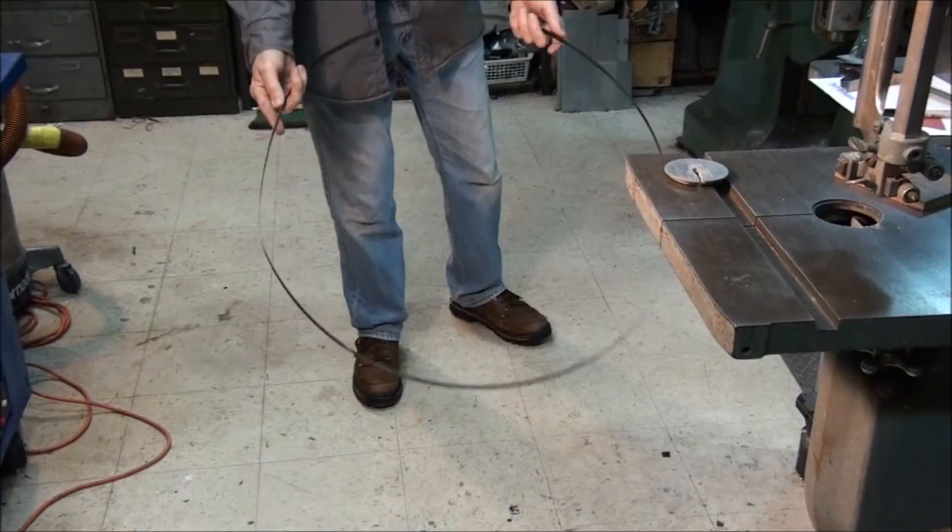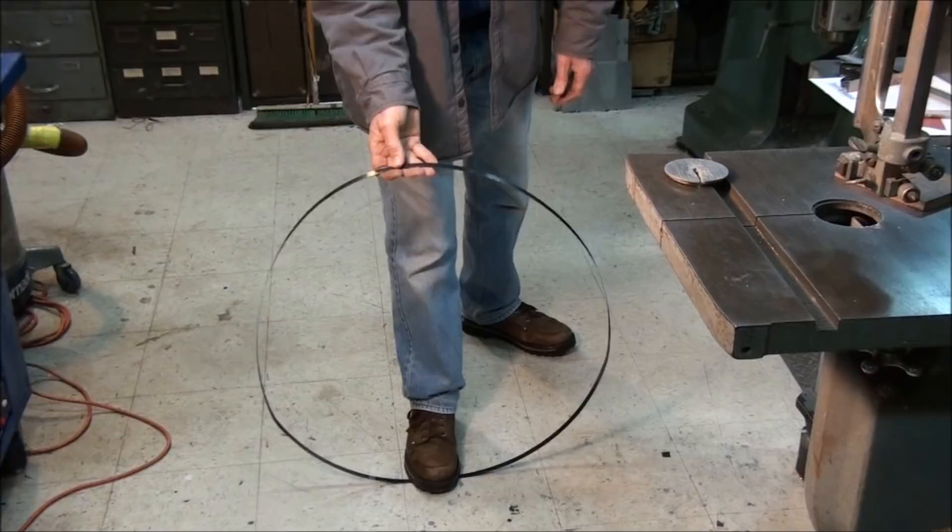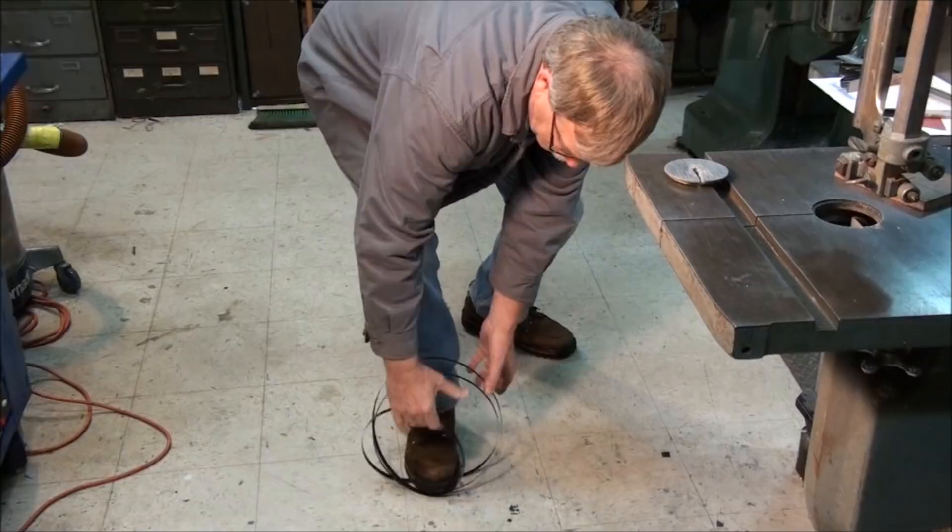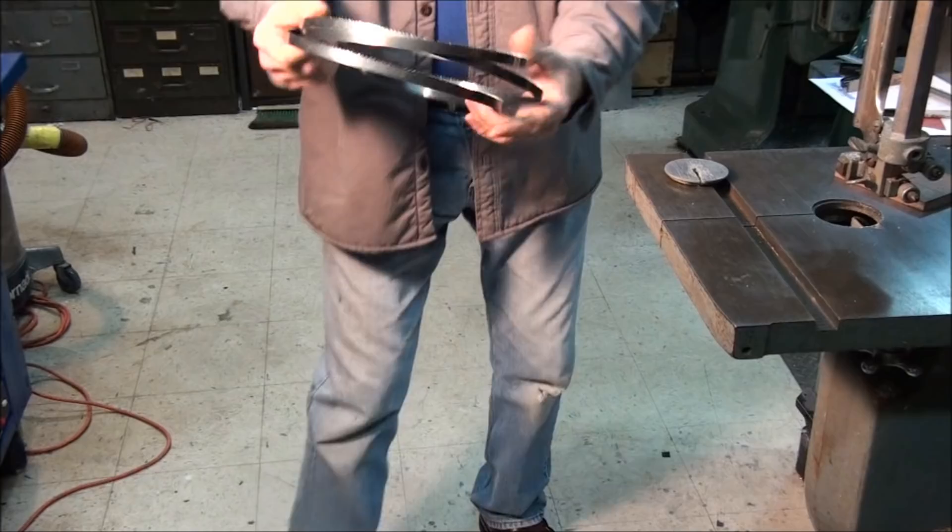So the easiest way to coil a blade up is just hold it in front of you like this and step on it with the toe of your foot, and then you hold it with the palm of your hand up like this and just rotate the blade and push it down at the same time. Rotate the blade counterclockwise and it will fold up real nice like this.